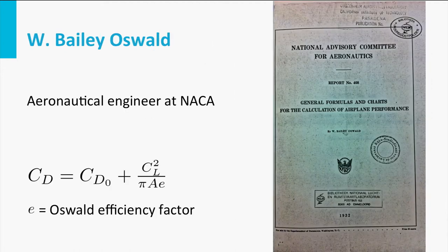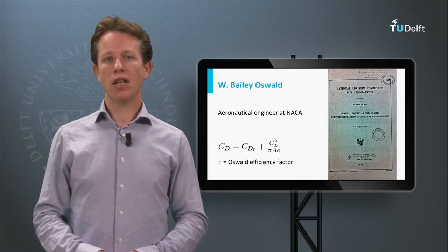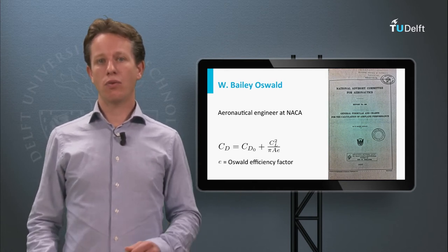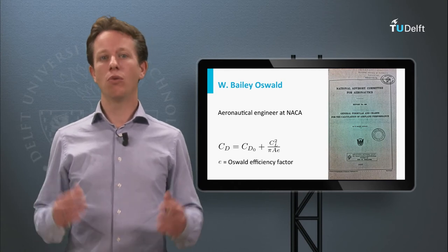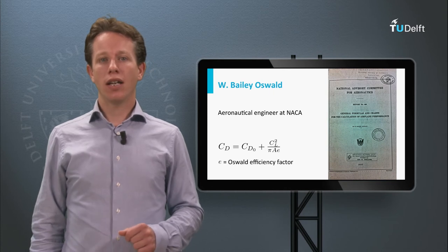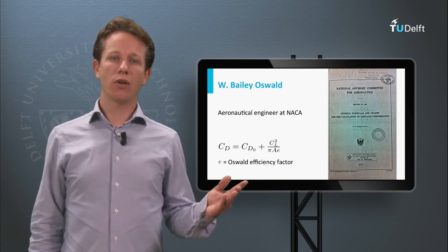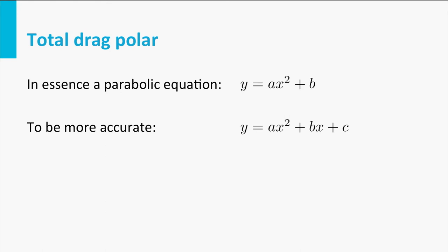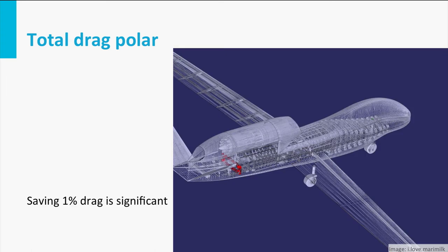However, now we use what we call the factor E, the Oswald efficiency factor, named after W. Bailey Oswald. He was a famous aeronautical engineer already in 1932, working for the predecessor of NASA. Now this factor E is used instead of the wing efficiency factor phi if we describe a complete aircraft and not just merely a wing. In this case the zero lift-drag coefficient CD0 is also larger than for the wing only case. In reality, a two-term drag polar is used in order to be a bit more accurate. This accuracy is needed in the real world when a drag decrease of 1% is already very significant.